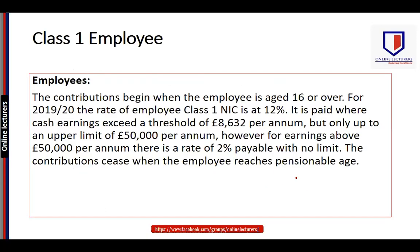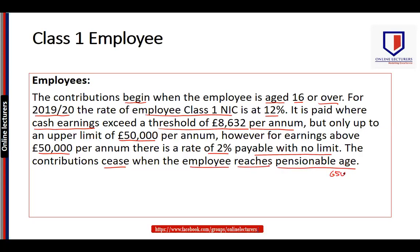Let's now discuss each NIC class one by one. As far as Class 1 employee NIC is concerned, contributions begin when the employee's age is 16 or over. For 2019/20, the rate of employee Class 1 NIC is 12%, paid where cash earnings exceed a threshold of £8,632 per annum but only up to £50,000. For earnings above £50,000, there is a rate of 2% with no upper limit. Contributions cease when the employee reaches pensionable age, which is usually 65.